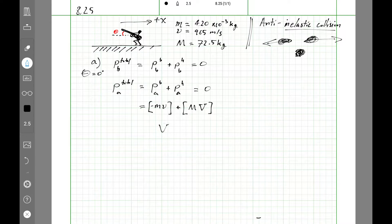So since that's equal to zero, you just throw this over to the other side. It becomes a positive m, v, divided by capital M. And then put in the numbers. 4.2 times 10 to the minus 3, times 965, divided by 72.5, 0.05. 5.559 meters per second.